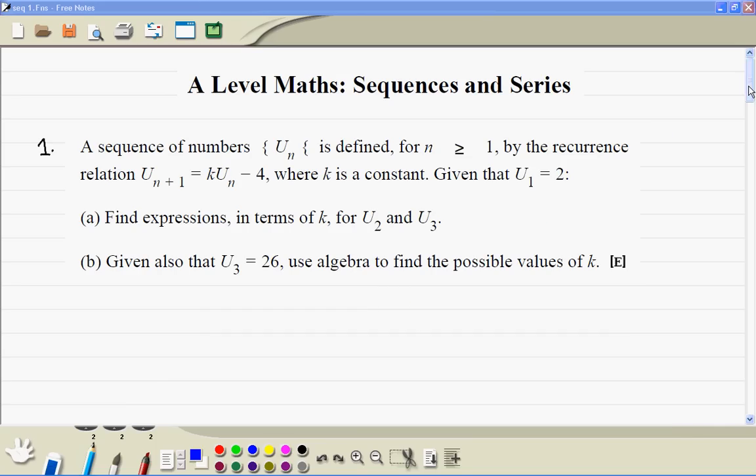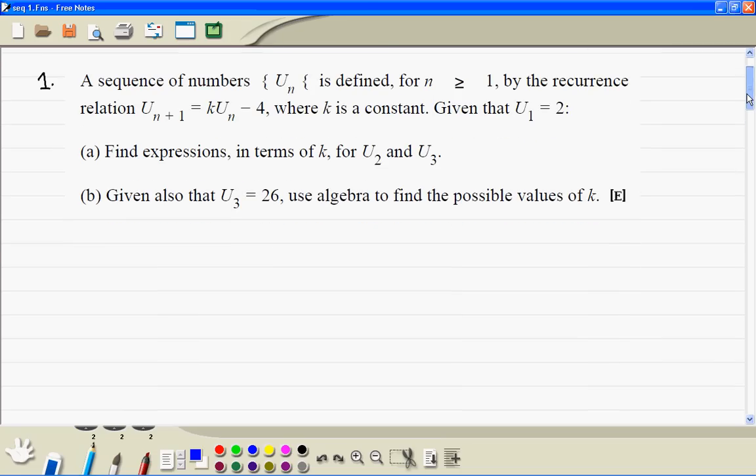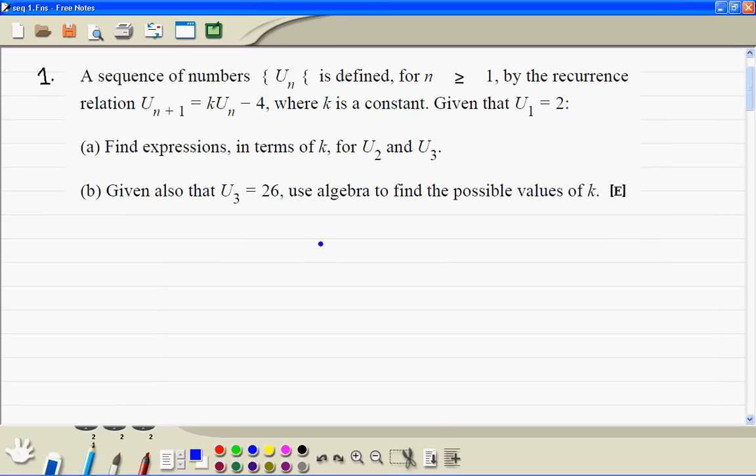Sequences and series. First we write the formula down. So the formula is u_{n+1} is k times u_n minus 4.